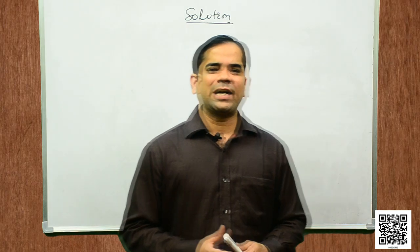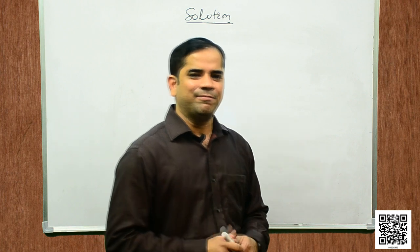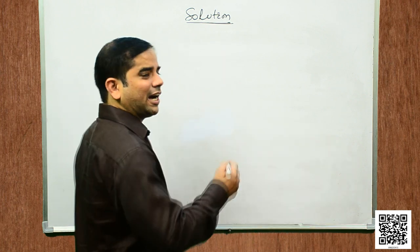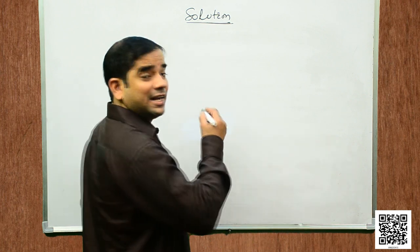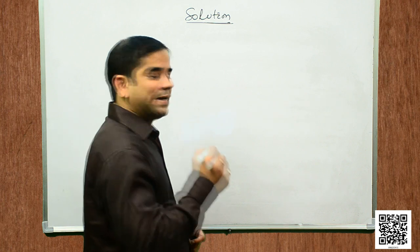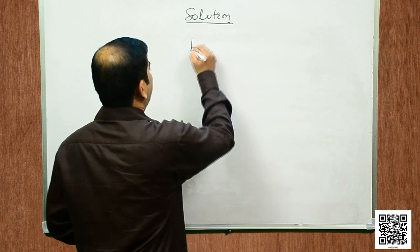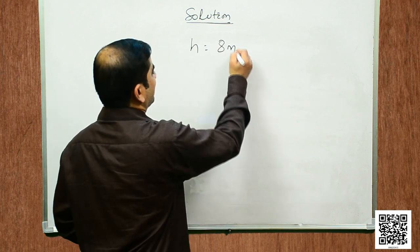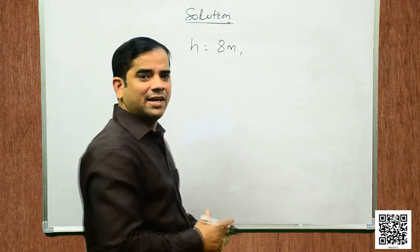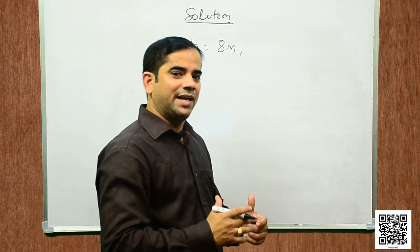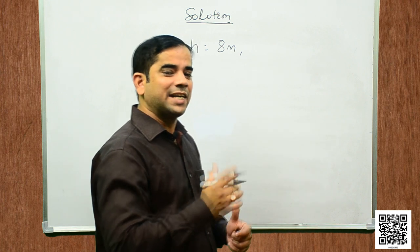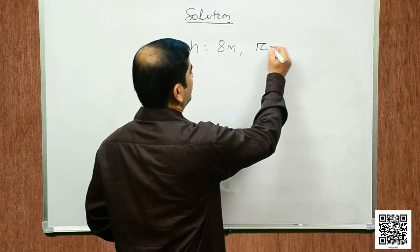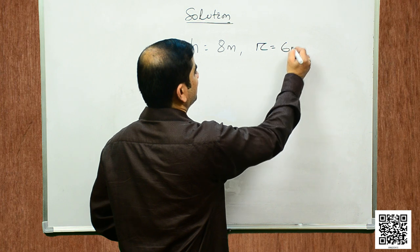Students, what are the given data? As per the given data, height of the tent is 8 meters, so h is equal to 8 meters, and radius of the conical tent is 6 meters, so r is equal to 6 meters.